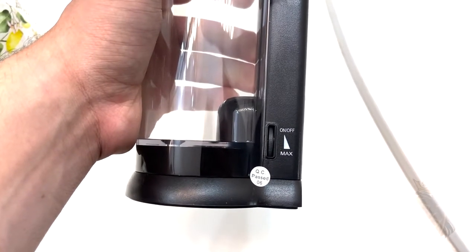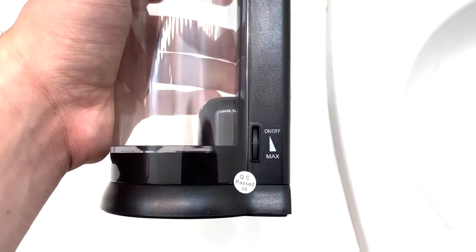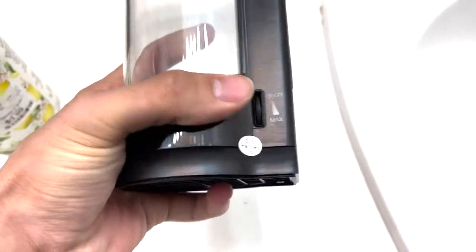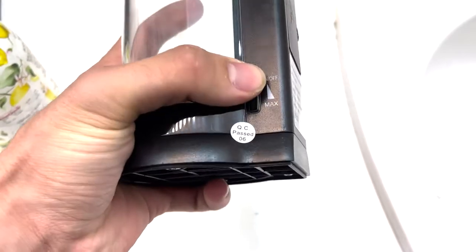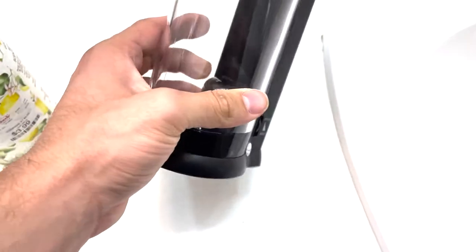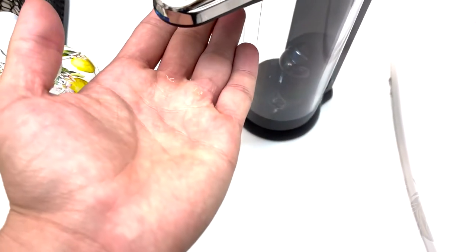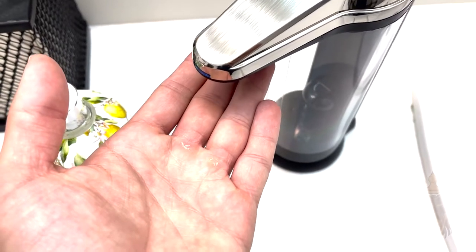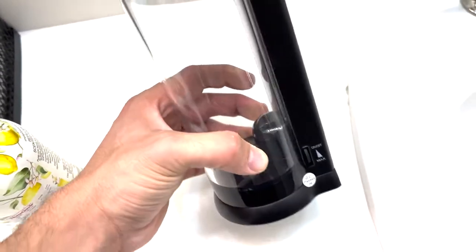On the side we have our on and off switch and this allows you to change how much soap comes out by using this little piece right here that you can move. So then when you put your hand underneath, as you can see the motor will pull soap down. So let's fill this up and see how it works.